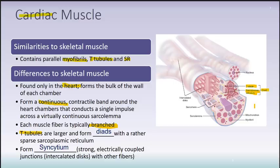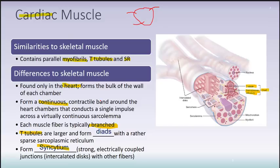Cardiac muscle also has what's called a syncytium, meaning it has the ability to conduct electrical activity from one cell to another without individual nerves innervating each part of the heart. Instead of having a nerve innervate every area, the syncytium allows a nerve impulse to spread throughout the entire heart, allowing it to contract efficiently and powerfully.